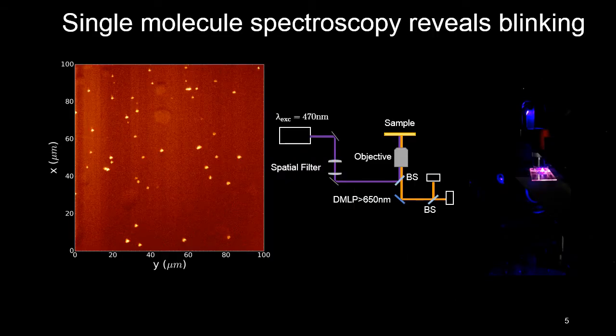Before I get into the technicals, I wanted to point out that we can only really see blinking on a single quantum dot scale. Here in the middle I have a simplified schematic of the microscope we use to image these things, and on the right an actual photo of the microscope in action. This instrument raster scans an excitation spot across the sample and collects the photons emitted from the sample.